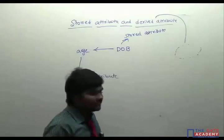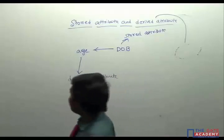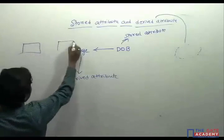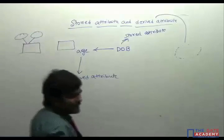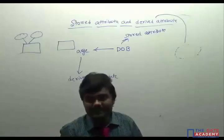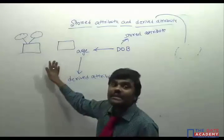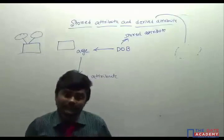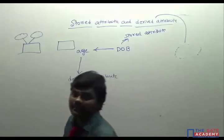So we have seen what is an entity, what are the attributes for an entity. Next in the ER model we will see what kinds of relationships are possible between entities, and then we will look at cardinality and all those features.